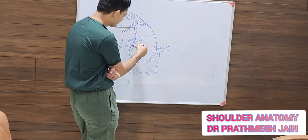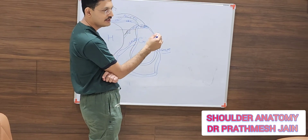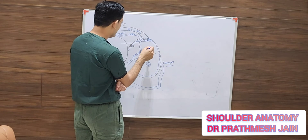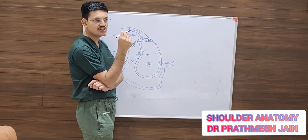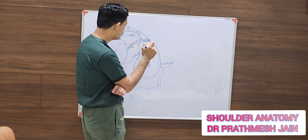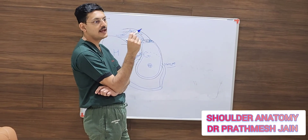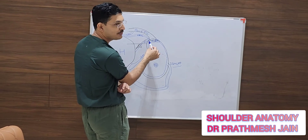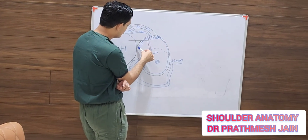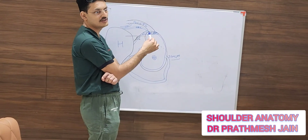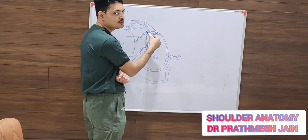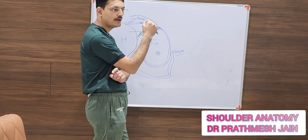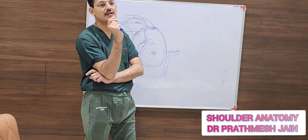The second layer is the capsular layer, which covers the whole joint. The capsule has reflections or folds, the most readily identifiable of which is the MGHL — the middle glenohumeral ligament. The MGHL transects the subscapularis tendon at about 60 degrees, crossing its upper border. The fold of capsule that crosses or transects the upper border of the subscapularis is called the middle glenohumeral ligament.